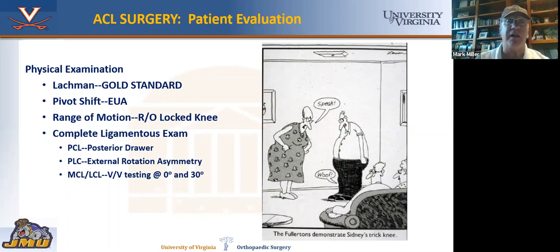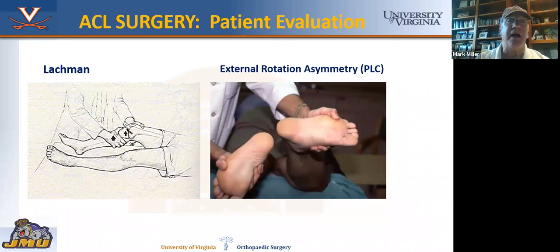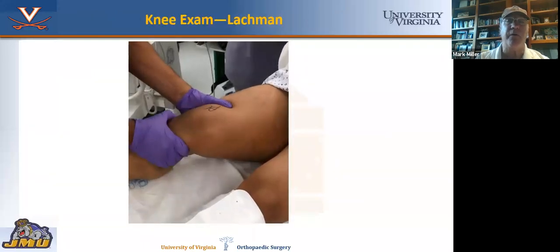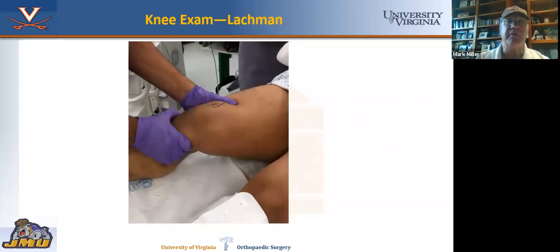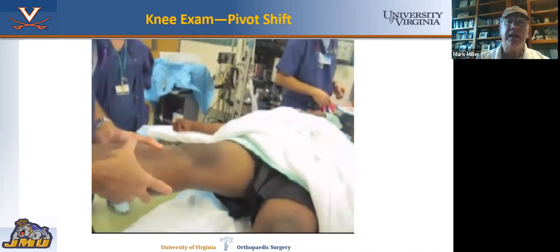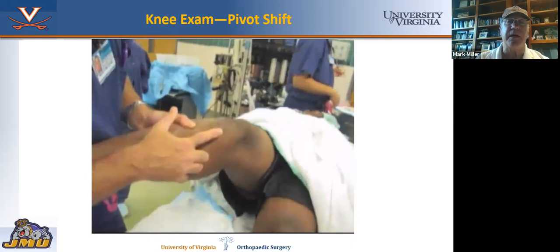It's also important for all of us to know about all the other exams because sometimes there are concurrent injuries to the MCL, the posterolateral corner, or the PCL. You can get fooled if you don't do a thorough exam. Here's an example of the Lachman when we pull forward on the tibia, and an example of external rotation asymmetry on the right knee, which has a combined posterolateral corner injury. Here's the pivot shift with valgus stress — as we push the knee into flexion, it subluxes.